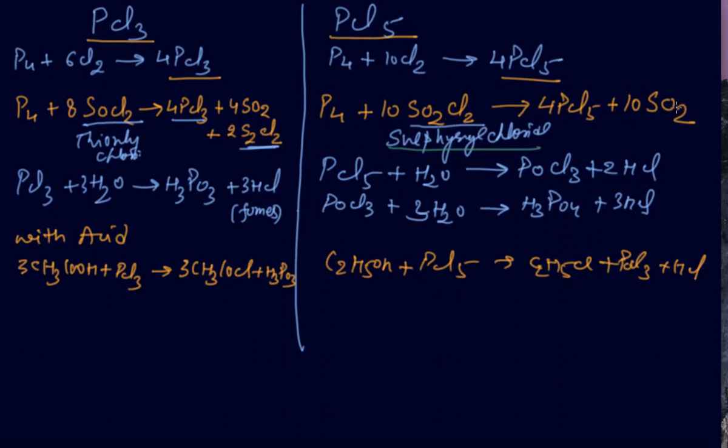Next reaction is simple but important: PCl3 fumes in water due to the formation of HCl. Whenever somebody is talking about fumes, your answer must be HCl. It reacts with water to give phosphorous oxychloride and HCl. POCl reacts with more water and gives you H3PO3. These reactions are all important, one by one.